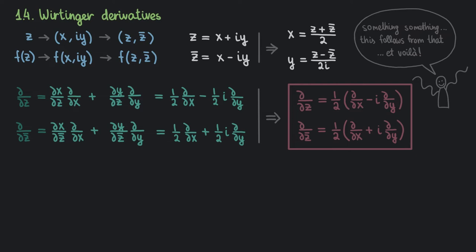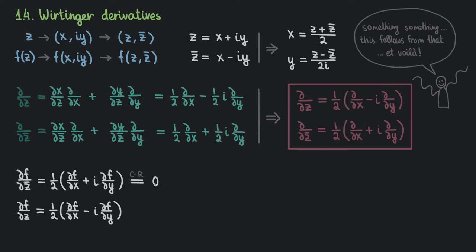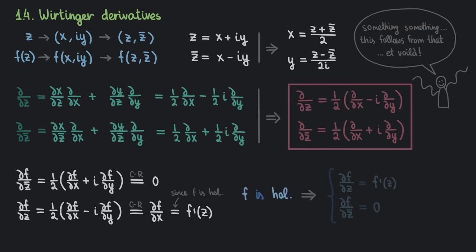Now, after we apply these operators to a holomorphic function f, we discover something interesting. Starting with ∂f/∂z̄, using the Cauchy-Riemann equations, that is exactly zero. On the other hand, for ∂f/∂z, using the Cauchy-Riemann equations, that is just ∂f/∂x — which, since f is holomorphic, is just the derivative of f. So if f is holomorphic, then ∂f/∂z equals the derivative of f, and ∂f/∂z̄ equals zero. Therefore, f cannot depend on z̄.